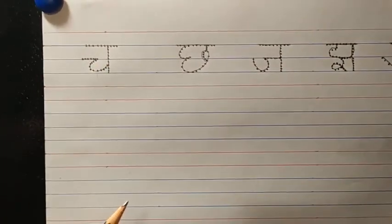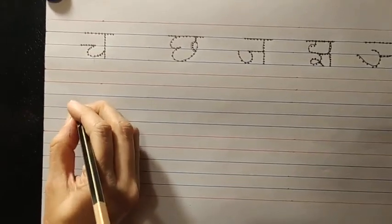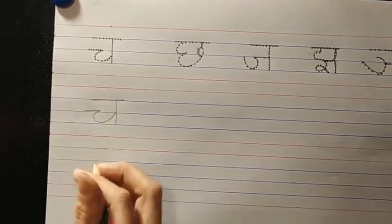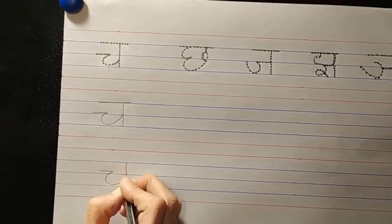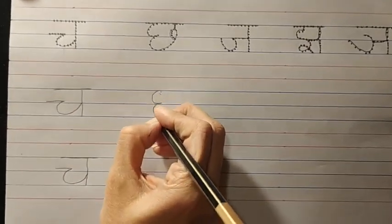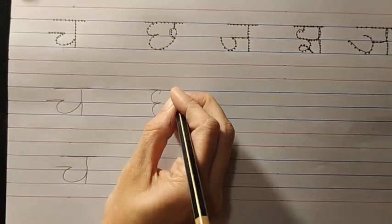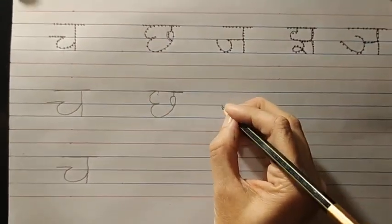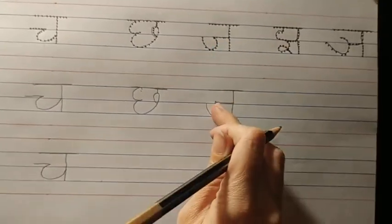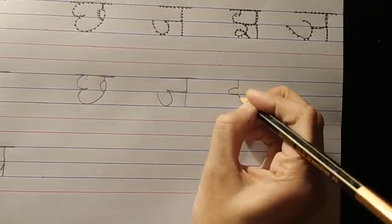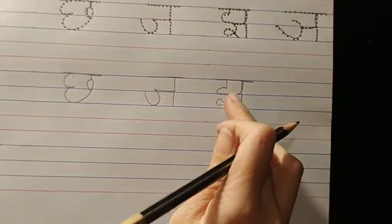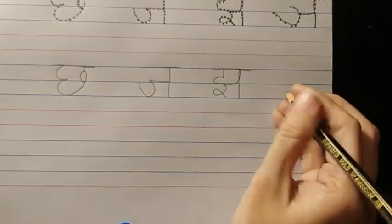Now we have written the first line. Now, how to write them — we are going to write Ch under Ch, then again Ch, and in this way we are going to complete the page. We continue writing Ch under Ch, and likewise complete all rows on the page.